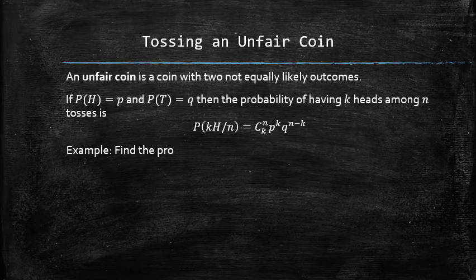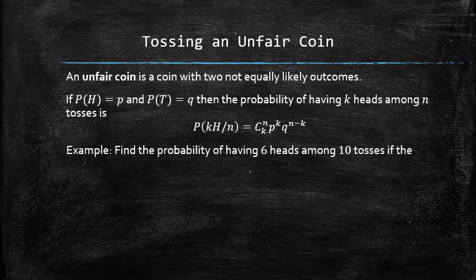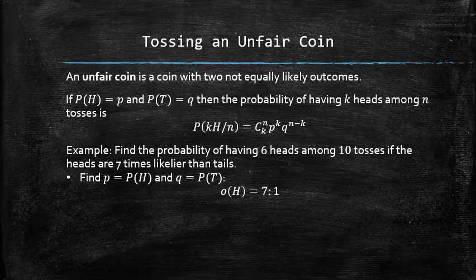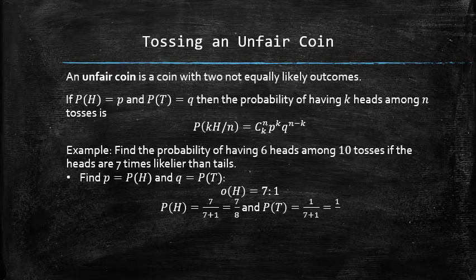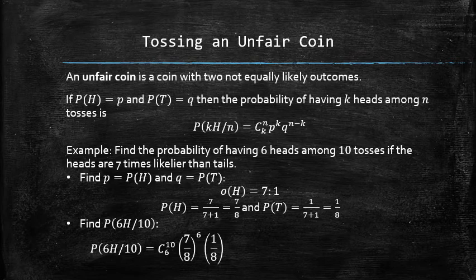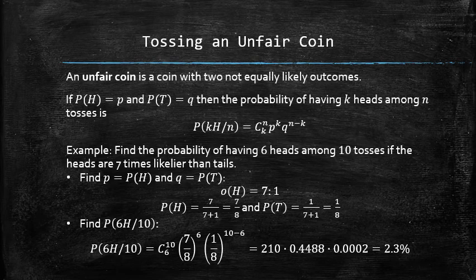Let's find the probability of having 6 heads among 10 tosses of an unfair coin if heads are 7 times more likely than tails. First, let's find the probabilities of each outcome. The odds in favor of heads are 7 to 1, therefore the probability of heads is 7/8 and the probability of tails is 1/8. Now we can find the probability of having 6 heads among 10 tosses using the formula. As a result, we get a probability of approximately 2.3%.